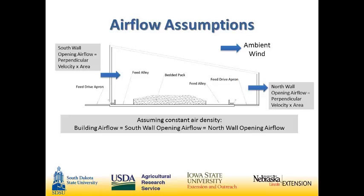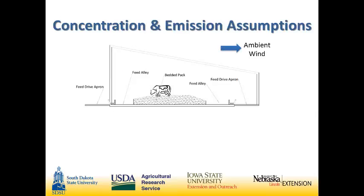Now, the south wall is a much larger opening, and so as air goes through a smaller opening, that air speed would have to increase for the flows to balance. But this was our assumption going in, and of course if wind reversed — if we had a north wind — so would the airflow direction through those openings. Along with those airflow assumptions, we had some assumptions on concentrations and emissions from these farms.